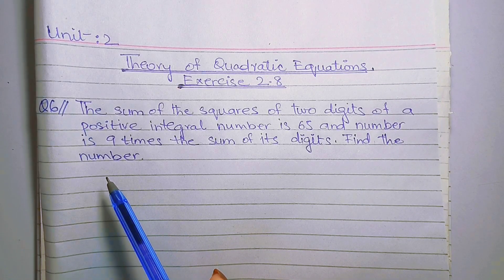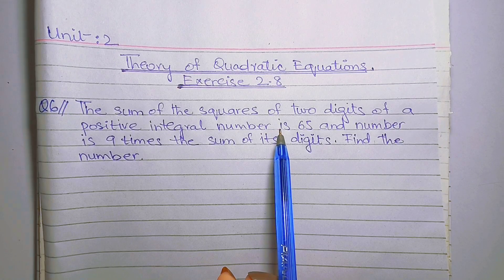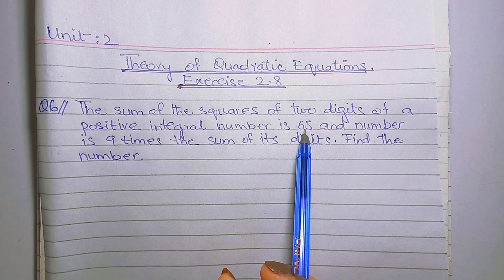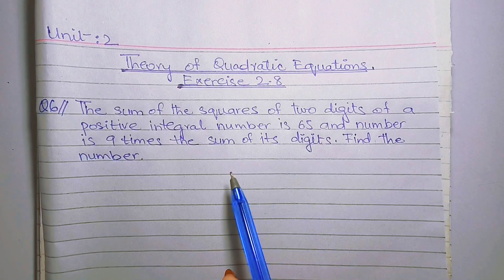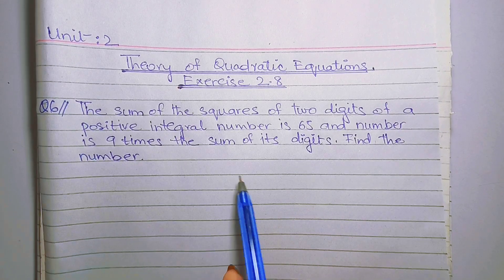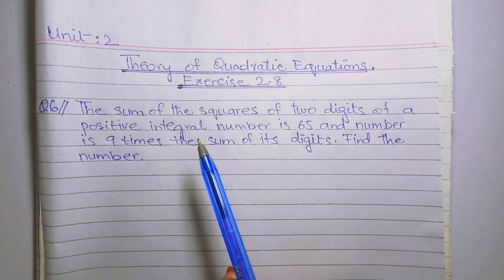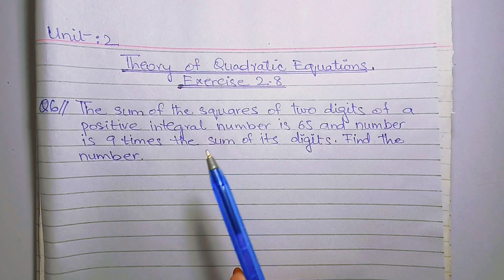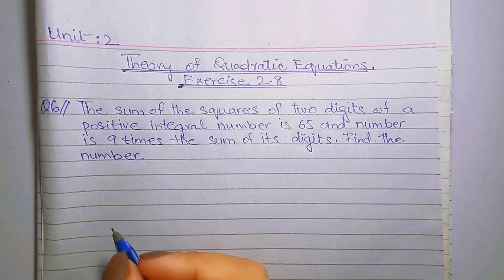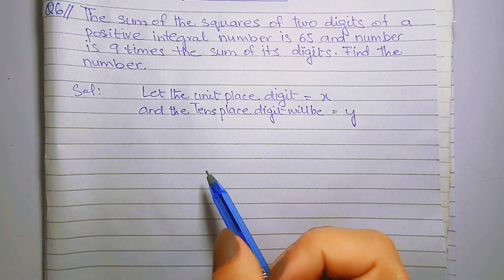इस question में हमें यह का गया है कि एक दो digit का positive number find out करना है जिसके digits के square का sum 65 है और वो number, digits के sum का 9 times है। यह एक two-digit number है, इसलिए एक digit unit place पर होगा और दूसरा 10th place पर होगा।